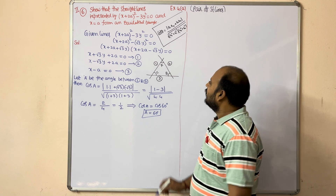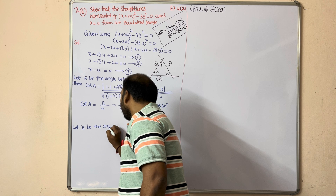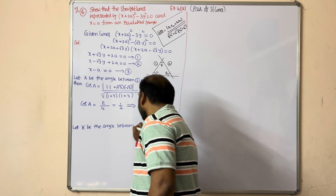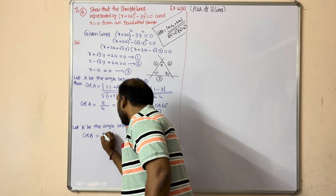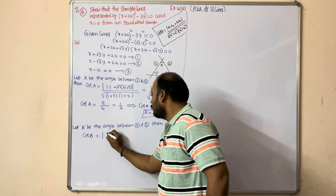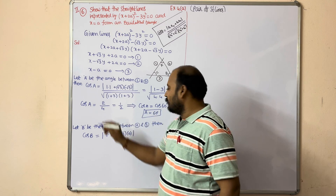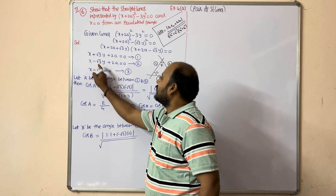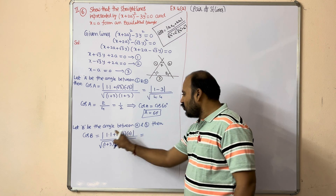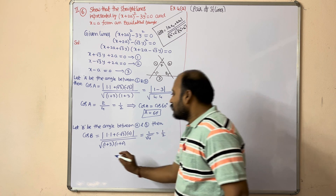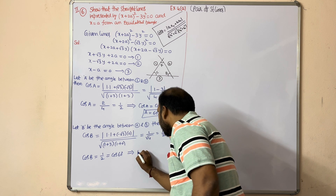Similarly, let B be the angle between lines 2 and 3. cos B = |a₁a₂ + b₁b₂| / (√(a₁² + b₁²) · √(a₂² + b₂²)). Here x-coefficients: 1×1 = 1; y-coefficients: (−√3)×0 = 0. Numerator: |1 + 0| = 1. Denominator: √(1 + 3) × √(1 + 0) = √4 × 1 = 2. So cos B = 1/2 = cos 60°, therefore B = 60°.